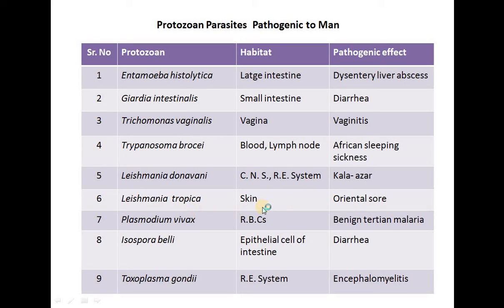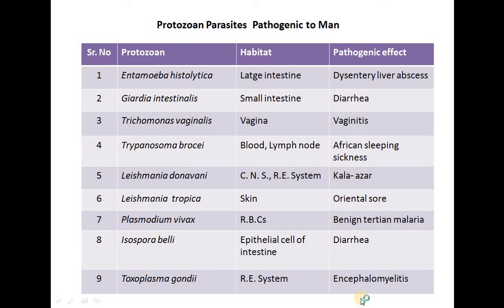Leishmania tropica — habitat: skin; causes oriental sore. Plasmodium vivax — habitat: erythrocytes; causes benign tertian malaria. Isospora belli — habitat: epithelial cells of intestine; pathogenic effect: diarrhea. Toxoplasma gondii — habitat: reproductive system; pathogenic effect: encephalomyelitis.